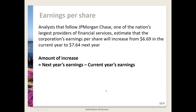Let's continue looking at analyzing earnings per share. Analysts that follow JPMorgan Chase, one of the nation's largest providers of financial services, estimate that the corporation's earnings per share will increase from $6.69 in the current year to $7.64 next year. We're really just comparing next year's earnings to this year's: 7.64 minus 6.69 gives us an expected $0.95 increase in earnings per share.